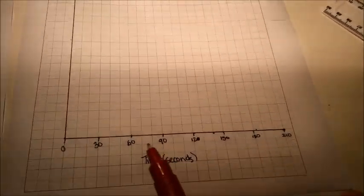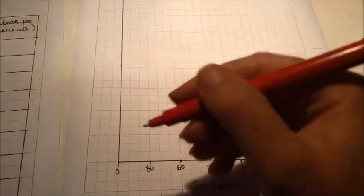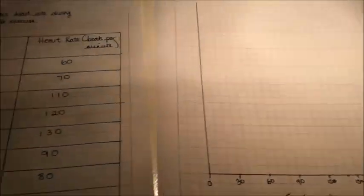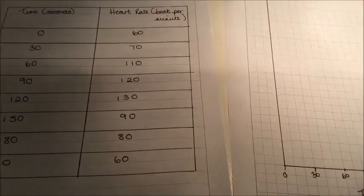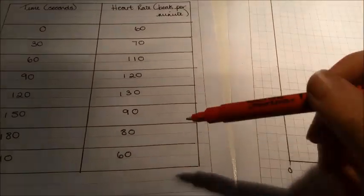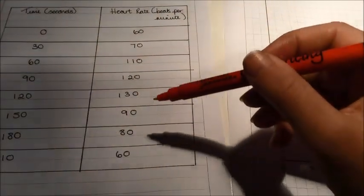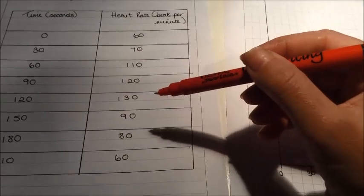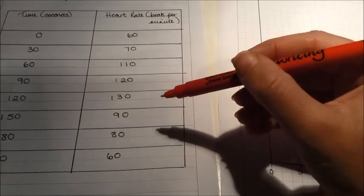So now I've done my x-axis, I now need to do my y-axis going this way. So let's go back to our data and see how high it goes. Well, our lowest data is 60, but our highest is 130. So the scale on the side has to go up as far as 130.